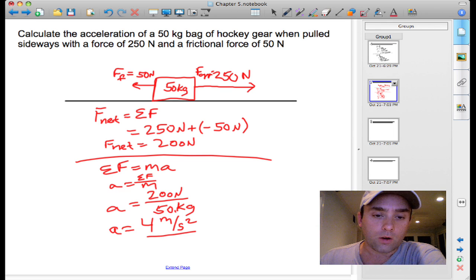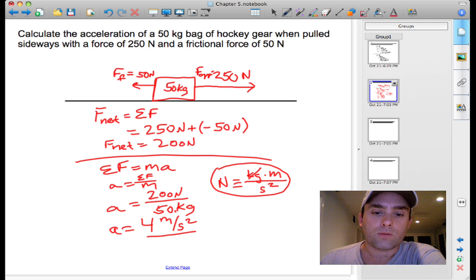And the acceleration is 4 meters per second squared. We get this unit meters per second squared by knowing that we define Newton as a kilogram meter per second squared. So when you use this unit here and divide by kilograms, the kilograms cancel out and you're left with meters per second squared. So the answer to this problem again is 4 meters per second squared, and that acceleration is to the right.